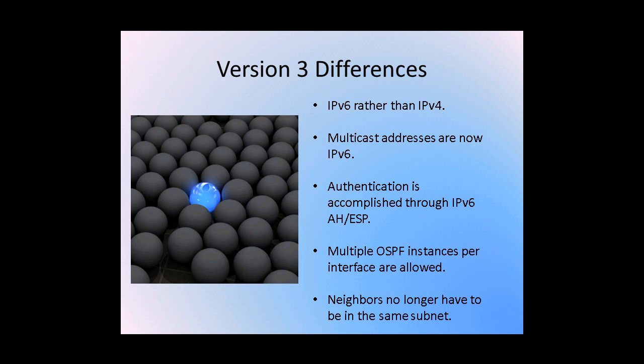Now that we have looked at some of the similarities between OSPF Version 2 and Version 3, I would like to take a few minutes and discuss the major differences. In OSPF Version 3, all addressing and routing is done using IPv6 rather than IPv4. Version 3 was defined for IPv6 environments. Multicast addresses are now in IPv6, meaning that when routers communicate, they communicate on an IPv6 multicast address. Authentication is no longer accomplished through MD5 — it is now accomplished through IPv6 authentication headers. Multiple OSPF instances per interface are now allowed. Neighbors no longer have to be in the same subnet.